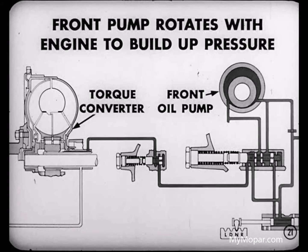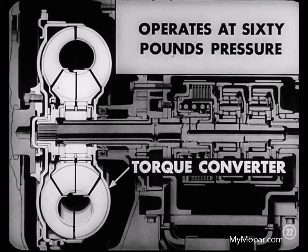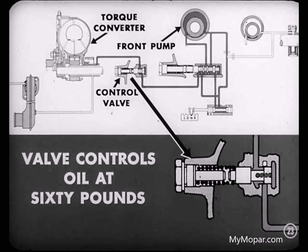When you start the engine, the front pump rotates with the engine and immediately builds up pressure for the torque converter and the hydraulic control system. You fellas know that the torque converter operates at 60 pounds pressure. However, the front oil pump is capable of putting out much more pressure than that. So we need some means of reducing this pressure to 60 pounds for torque converter use. And that's why we have a torque converter control valve.